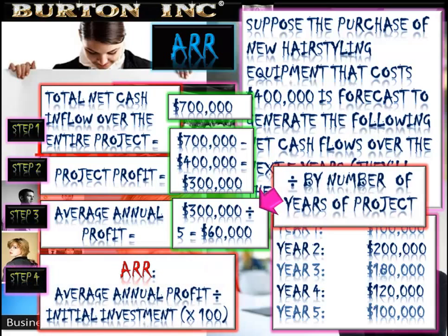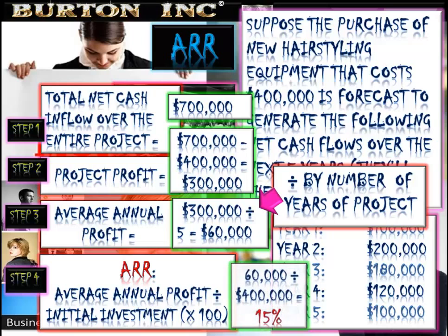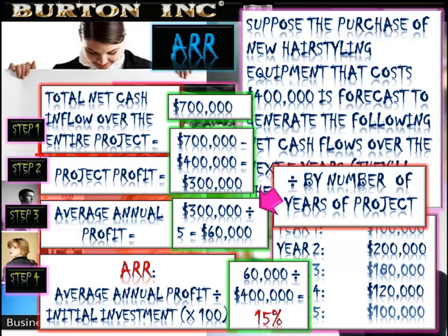All we need to do now is find that as a percentage. Our accounting rate of return is average annual profit divided by the initial investment. So $60,000 divided by $400,000, multiplied by 100, gives us a 15% average rate of return.